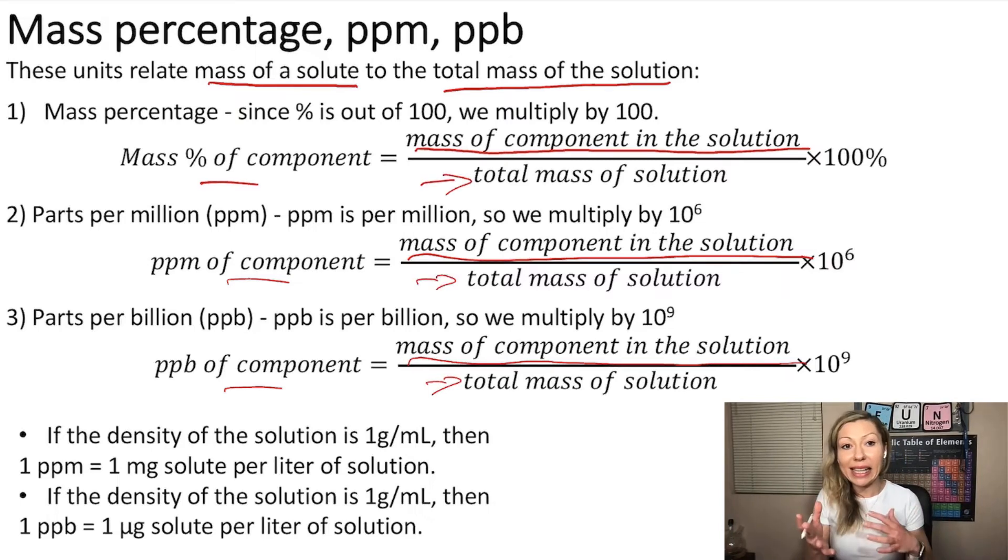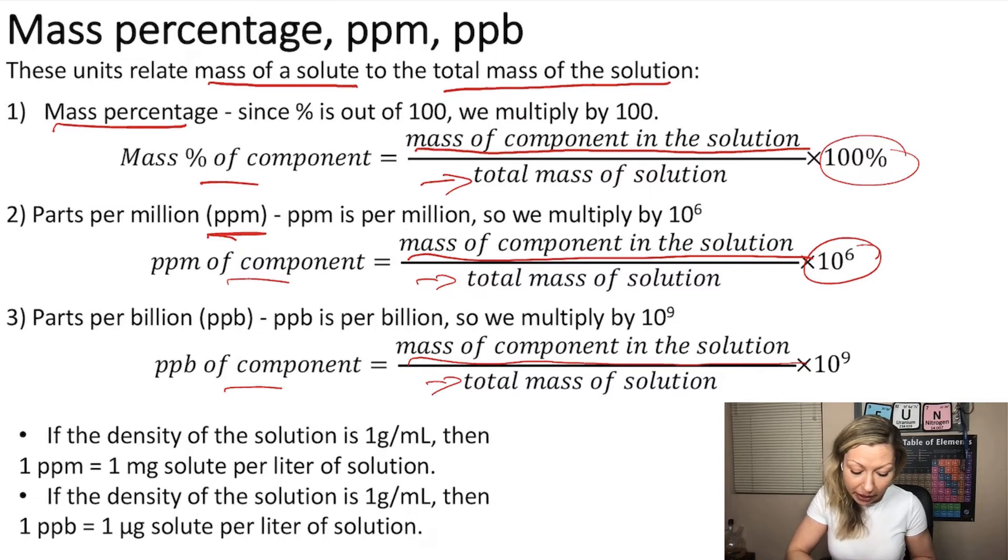Now the difference is that in case of mass percentage, because percent is out of 100, we will multiply by 100. In case of ppm, or parts per million, we are going to multiply by 10 to the sixth because it's per million. And in case of ppb, which is parts per billion, we are going to multiply by 10 to the ninth because it is billion.